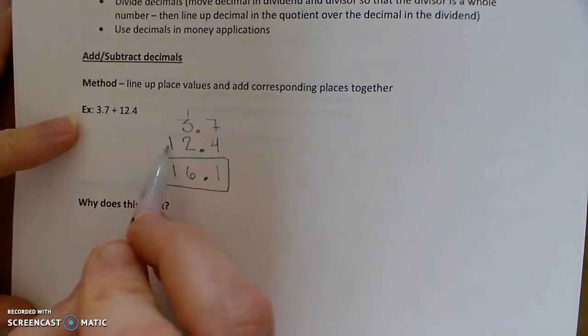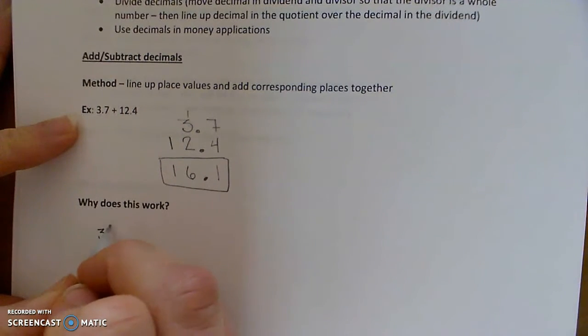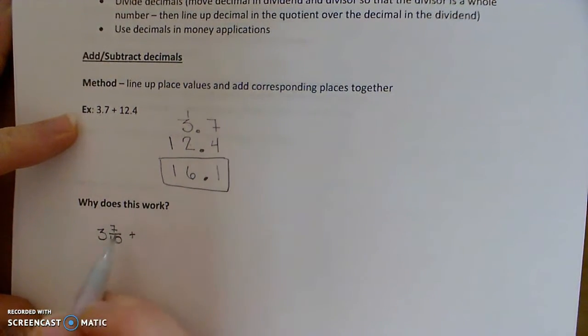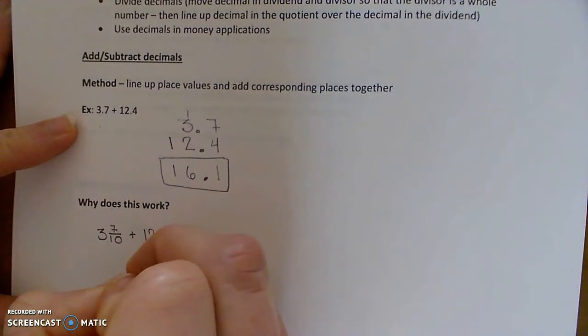So the question is, why does it work just to add the corresponding places together? So if we think of 3 and 7 tenths, which is the same as 3.7, and add that to 12 and 4 tenths.